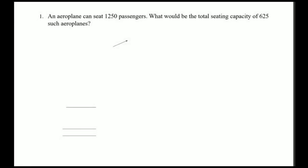Students, remember: whenever details about one thing are given and you are asked to find details about many things, you do multiplication. For example, in this situation, the number of passengers in one aeroplane is given and you are asked to find the number of passengers in 625 aeroplanes.